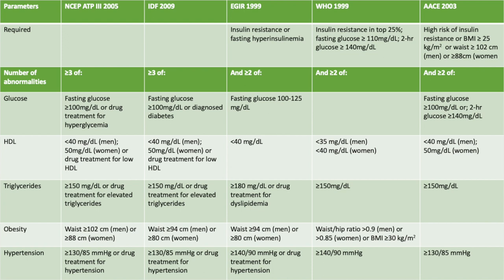NCEP ATP3 takes into consideration the following. It has to have at least three or more of: fasting glucose of more than 100 mg per deciliter or drug treatment for hyperglycemia; less than 40 mg per deciliter of HDL for men and 50 mg per deciliter of HDL for women, or drug treatment for low HDL; more than 150 mg per deciliter of triglycerides, or drug treatment for elevated triglycerides.